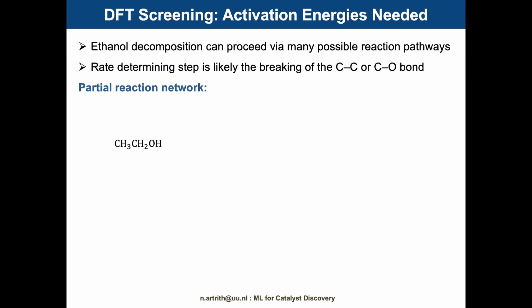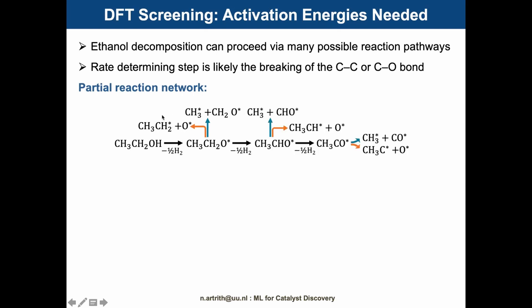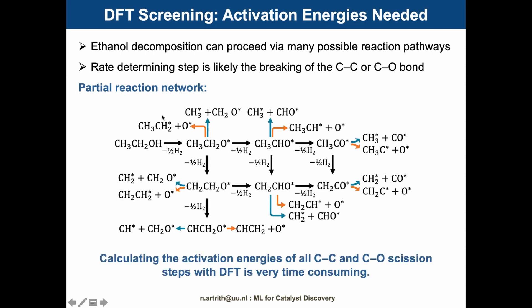In principle, we could calculate the reaction profiles for many different catalysts with DFT. For selectivity prediction, we need to know the rate determining step. This means we need the activation energies of all possible CC bond breaking and CO bond breaking. For the ethanol decomposition, this is a large number of possible reactions. Here you see a partial reaction network — the blue CC bond breaking and the orange CO bond breaking. There are so many different reactions, and it would be very time-consuming to calculate activation energies for all reaction states over many different catalysts using DFT.